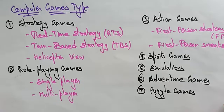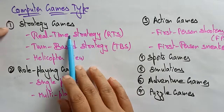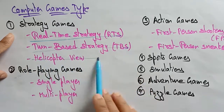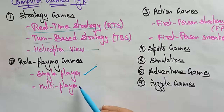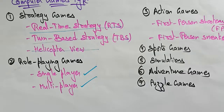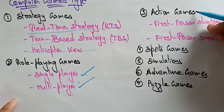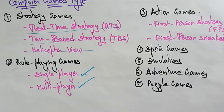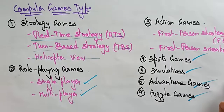Let's see the different computer game types. Strategy games work on real-time strategies, turn-based strategies, and helicopter view. Role-playing games can be single-player or multiplayer — for example, on Xbox you can play multiplayer games where AI is involved and other players are on the other side. Action games include first-person shooters and first-person sneakers. There are also sports games, simulations, adventure games, and puzzle games. These are all the different computer game types. Thank you.